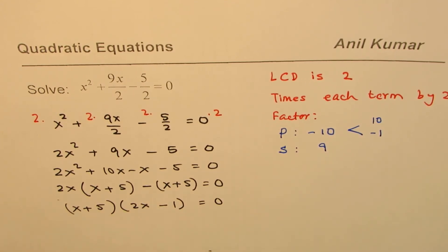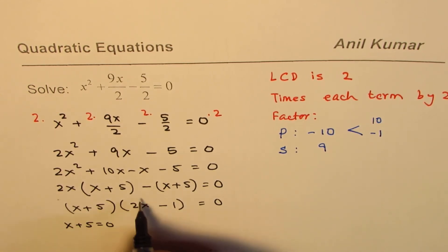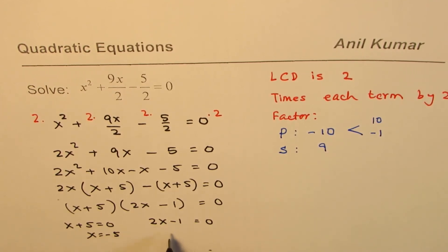We have two possible solutions. Whenever you have factored form, you can find the solutions by equating each factor to 0. One solution is when x + 5 = 0, giving x = -5. The other is when 2x - 1 = 0, giving 2x = 1 or x = 1/2.